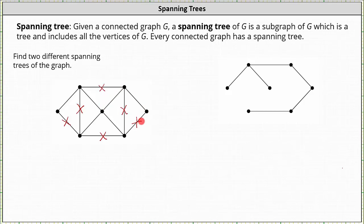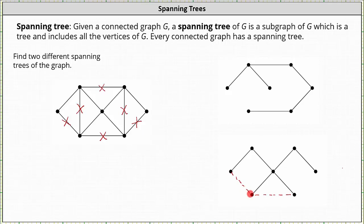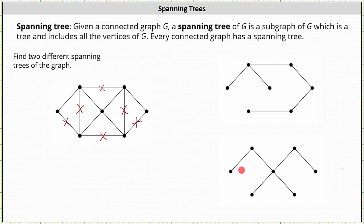But we still have a cycle among these four vertices, so let's go ahead and remove this edge. And now we have our second spanning tree. We removed this bottom edge, this edge, this edge, this edge, this edge, and this edge. Once these edges are removed, all the original vertices are still in the graph, but the graph doesn't have any cycles — it is acyclic — and therefore this is another possible spanning tree. I hope you found this helpful.